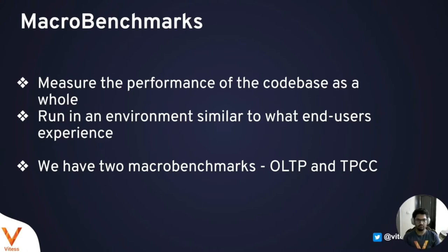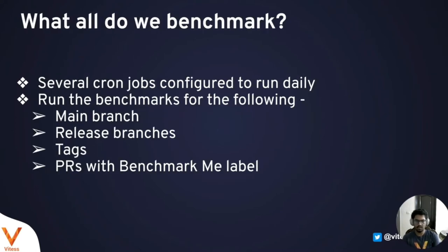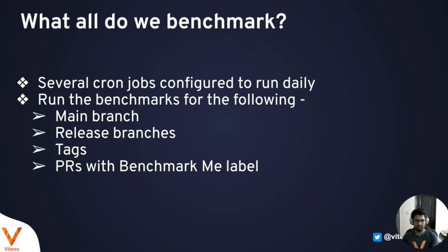The macro benchmarks we run have two categories: OLTP and TPCC. We have several cron jobs configured to run daily, keeping tabs on the main branch, release branches, tags, and PRs with the 'benchmark me' label. Every day, if any PR has been merged into the main branch, we check the commit hash and run both micro and macro benchmarks. We do the same for release branches and different tags, and also for all PRs with the benchmark label — so even before merging a PR, you know the performance impact, improving developer experience.